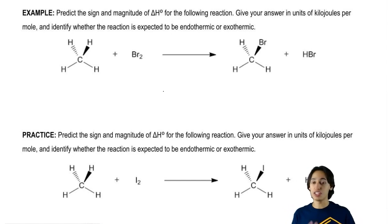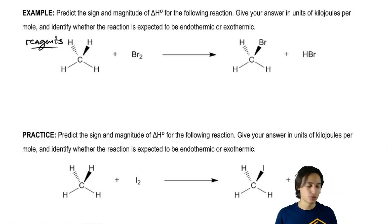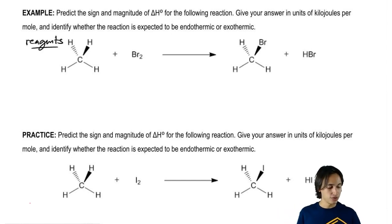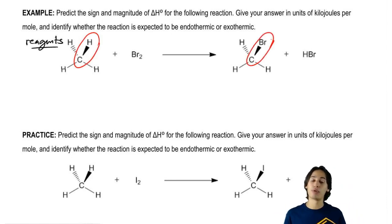On my reagent side, what I have is the bonds that are breaking because I can see that I used to have a C-H bond here, but now that's turning into C-Br. That means that at some point I must have broken that bond. So this is going to be the breaking side.